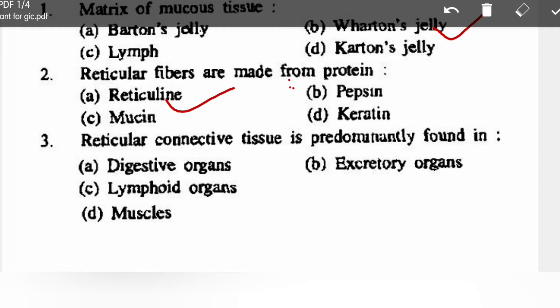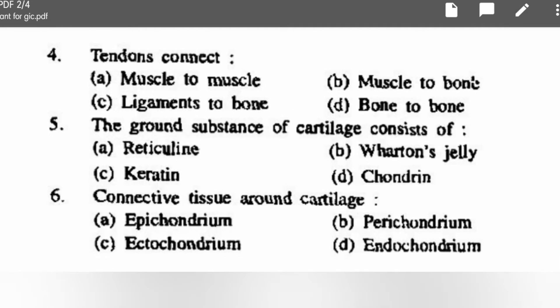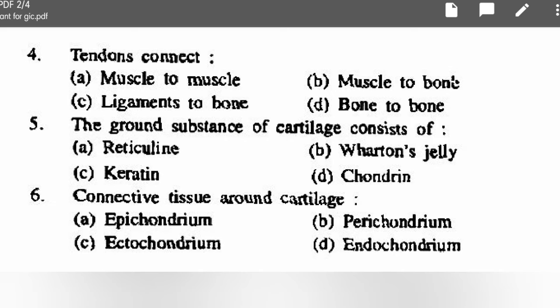Reticular fibers are made of reticulin protein. Reticular connective tissue is predominantly found in lymphoid organs. Tendon connects muscle to bone. The ground substance of cartilage consists of options: reticulin, Wharton's jelly, keratin, or chondrin — correct option is chondrin.